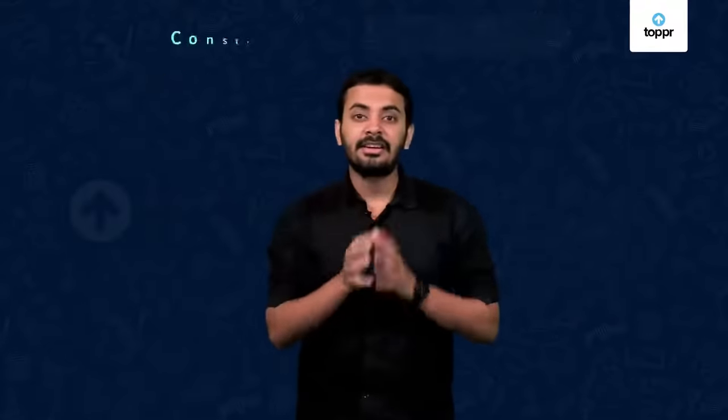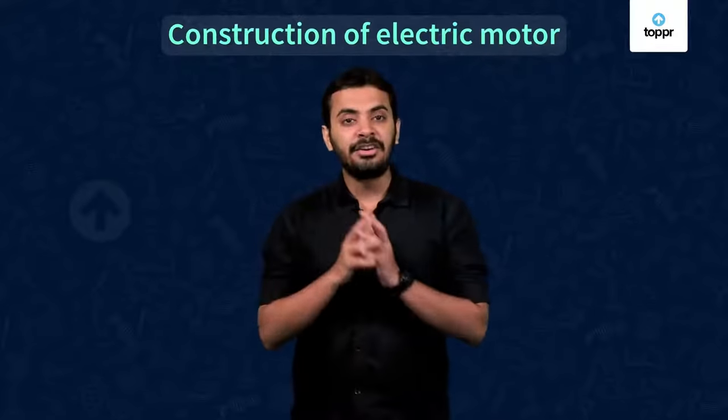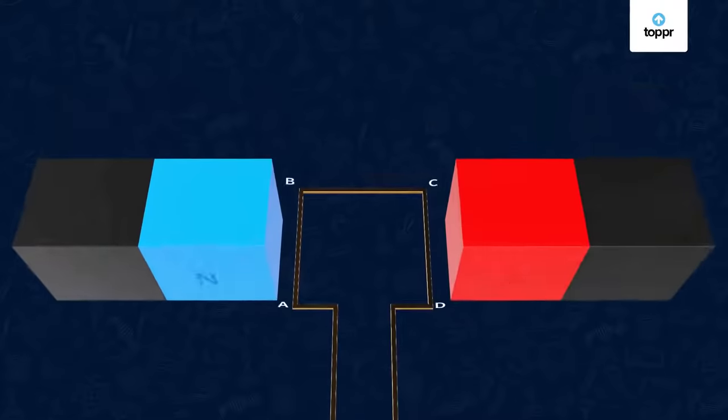Now, let's see the construction of a simple motor in detail. An electric motor consists of a rectangular coil of copper wire. Let's label it as ABCD. This rectangular coil is situated in between the two poles of a magnetic field in such a way that arm AB and CD are perpendicular to the magnetic field.